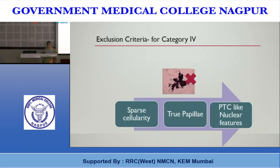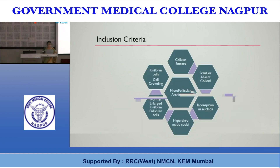Which lesions go under Category 4 (follicular neoplasm)? The sample must be at least moderately cellular — sparse cellularity with doubts goes into AUS. There should be no true papillae. The classical triad includes: moderately or markedly cellular smears, significant alteration in follicular architecture or microfollicular pattern, and scant or no colloid. Other criteria include enlarged uniform follicular cells, cell crowding, moderate or scant cytoplasm, and round uniform slightly hyperchromatic nuclei with conspicuous nucleolus.